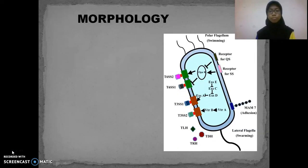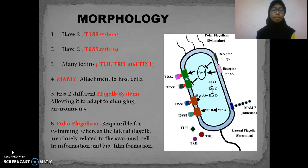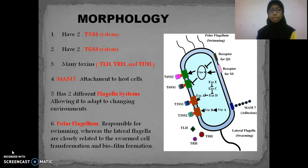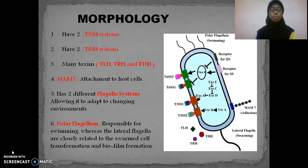The morphology. This picture shows the morphology of the structural cells of Vibrio parahaemolyticus. It has two types of T3SS system, and it also contains many toxins such as TLH, TRH, and TDH. It also contains MAM7, which is used to attach to host cells. It has two different flagellar systems which allow it to adapt to changing environments. The polar flagellum is responsible for swimming, whereas the lateral flagella are closely related to swarming cell transformation and biofilm formation.